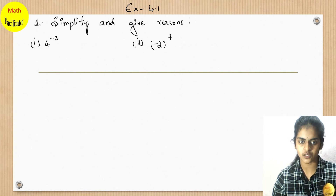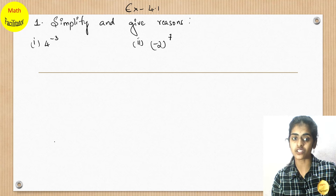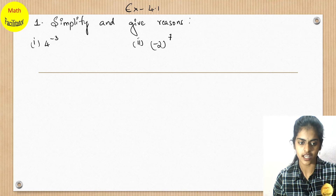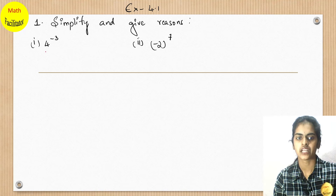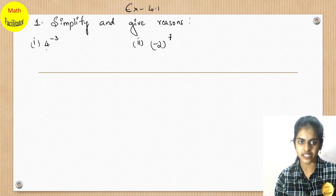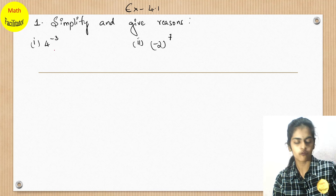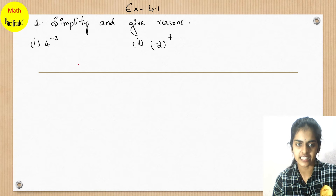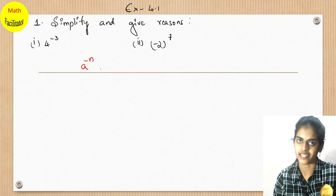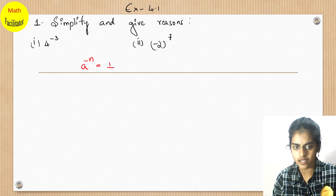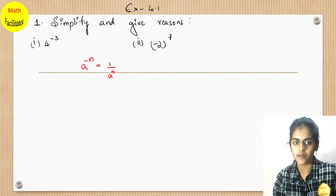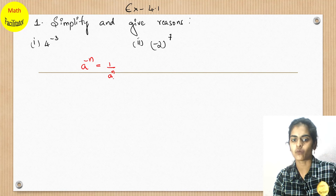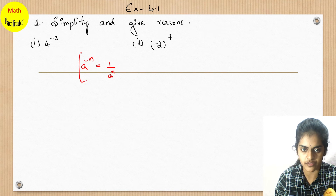Here in the first question, you will have to simplify and also give reasons. So how shall we simplify this? The first part is 4 to the power minus 3. It is like a to the power minus n, and that is 1 upon a to the power n. So a to the power minus n is nothing but 1 by a power n. This is the formula which we know.